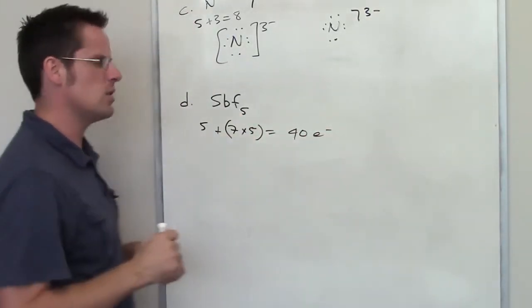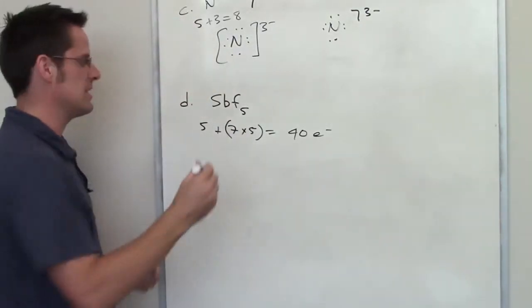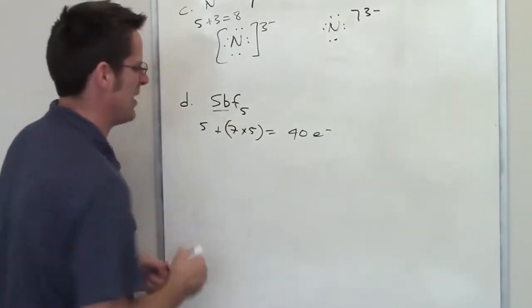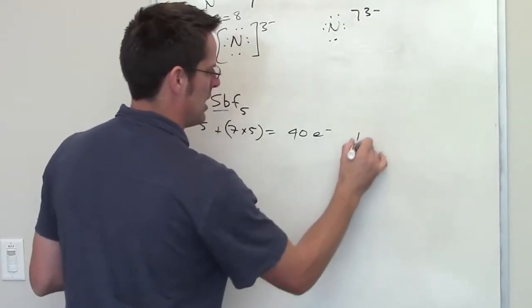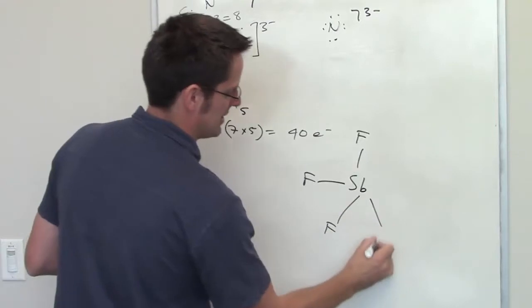So the next thing I need to do is figure out how they're going to be bonded together. Generally speaking, the least electronegative atom, in this case antimony, is the one in the center. The exception is, of course, hydrogen. I don't have any hydrogens to worry about here. So I'm going to put antimony in the center, and then I'm going to put bonds out to fluorines, or five fluorines in this case.